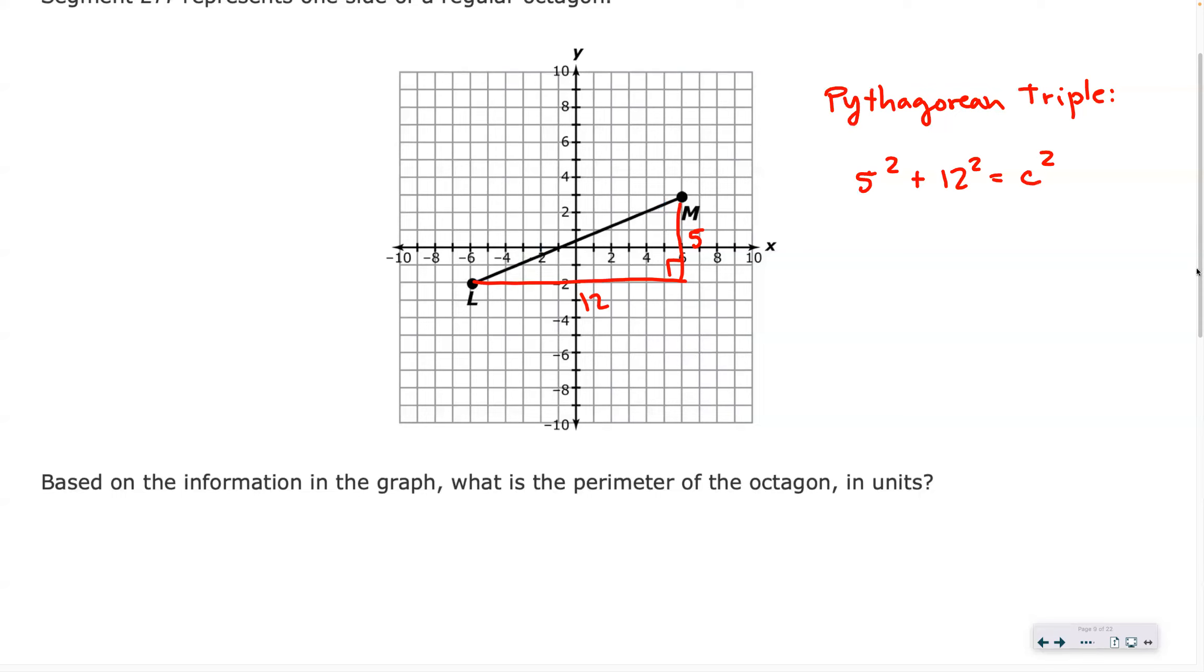What is 5 squared? 25. What is 12 squared? Keep thinking. So 25 plus 144? 169. 169 equals C squared.